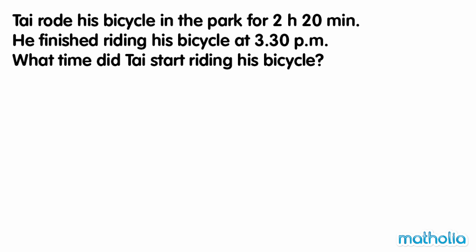Ty rode his bicycle in the park for 2 hours and 20 minutes. He finished riding his bicycle at 3:30 p.m. What time did Ty start riding his bicycle? Let's start at 3:30 p.m. and work backwards.